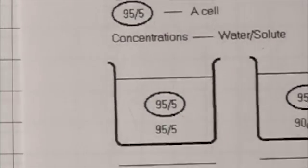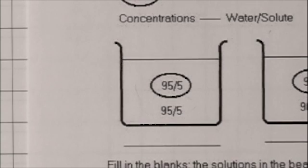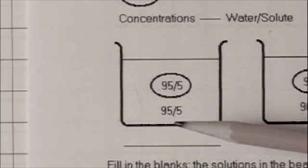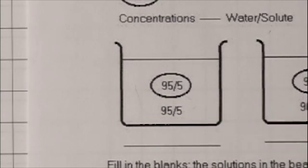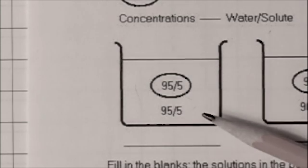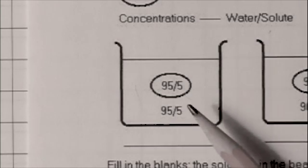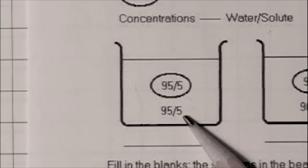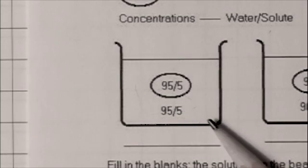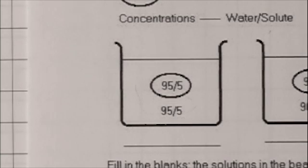Now, if we place that cell in a beaker that also is 95% water and 5% solute, the beaker is called what compared to the cell with respect to tonicity? Well, the solute concentration is the same, so the beaker is isotonic to the cell. Now, be careful with this.